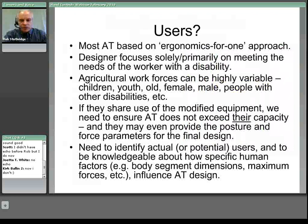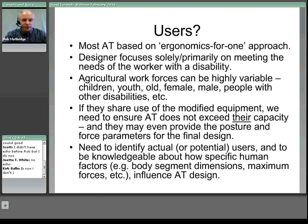Most assistive technology is based on an ergonomics for one approach — the design is focused solely or primarily on meeting the needs of the worker with a disability. But agricultural workforces are often highly variable, including children, youths, older workers, females, and males, including workers with existing injuries or disabilities. If modified equipment will be used by these people, we must ask: is it safe for them? What is the impact of the AT on their posture, their maximum grip diameter, pull force, push force? We need to define actual users to ensure AT doesn't exceed their capacity and cause injury.